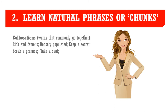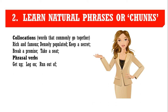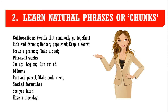These include collocations such as 'rich and famous,' 'densely populated,' 'keep a secret,' 'break a promise,' or 'take a seat.' Phrasal verbs such as 'get up,' 'lock on,' 'run out of.' Idioms like 'part and parcel,' 'make ends meet.' And social formulas such as 'see you later,' 'have a nice day,' and so on. It is easy to see why it may be difficult for students to achieve fluency in English. In traditional classroom teaching methods, grammar is generally taught as a priority, not these language chunks which students can use almost instantly in conversation.